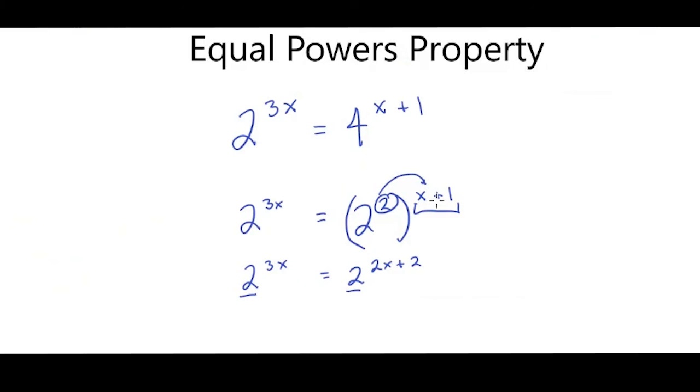So I know that 3x is equal to 2x plus 2. So I'll subtract 2x here. Subtract 2x here. Those cancel. 3x minus 2x is 1x or just x. And I'll bring down my positive 2. So x is equal to 2. And that's how you use the equal powers property to solve equations.